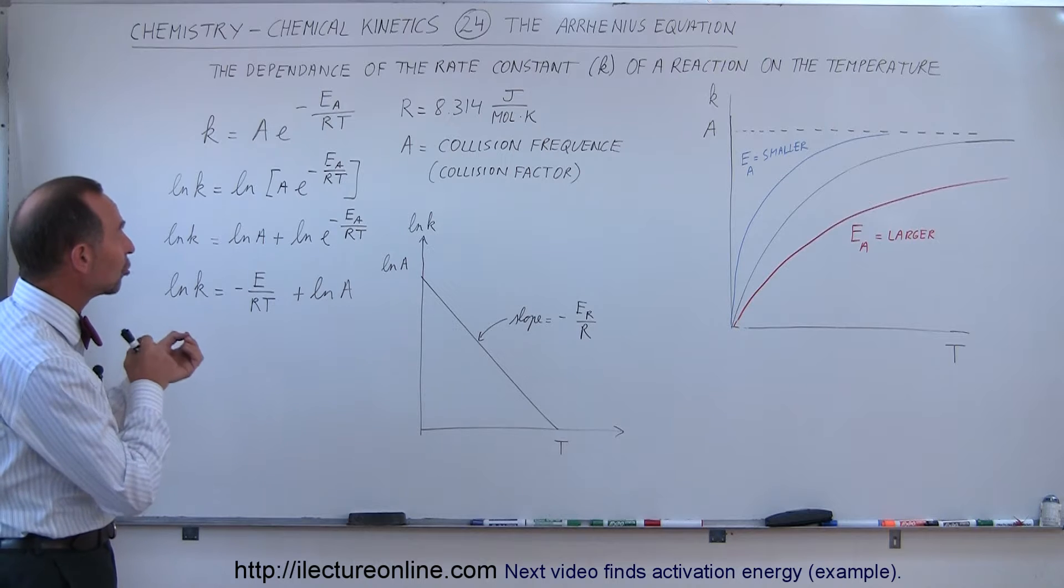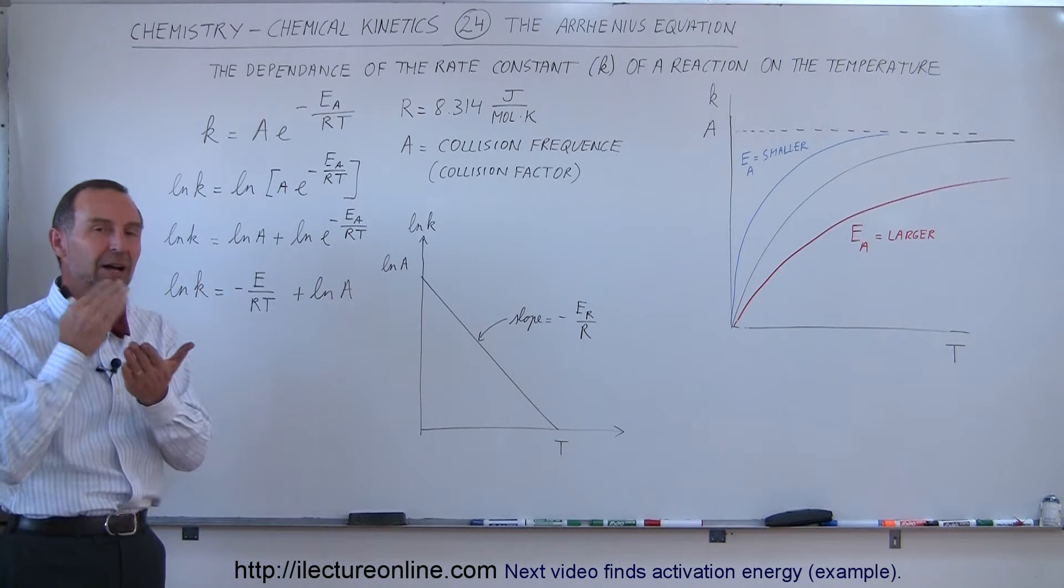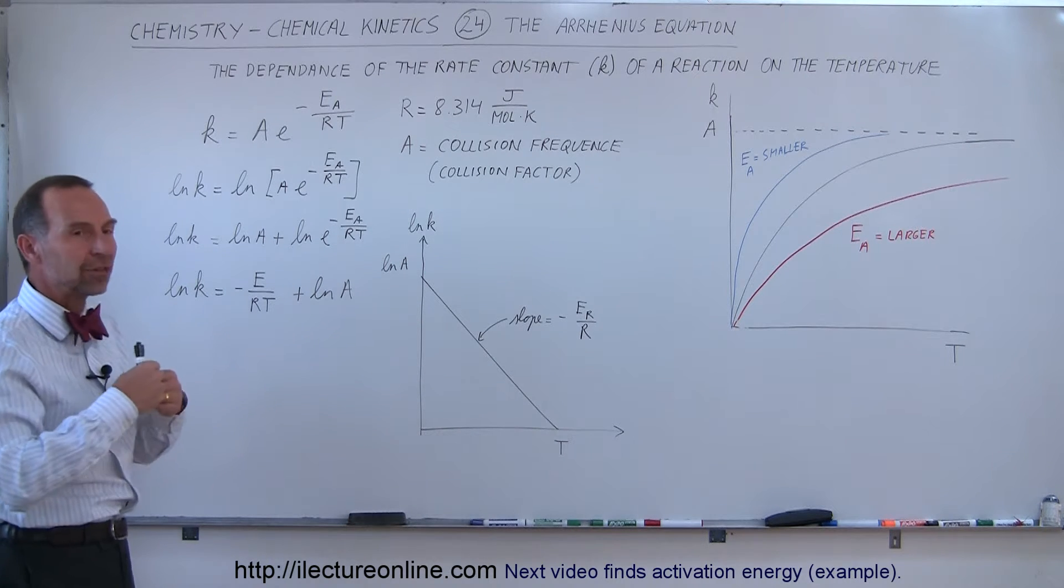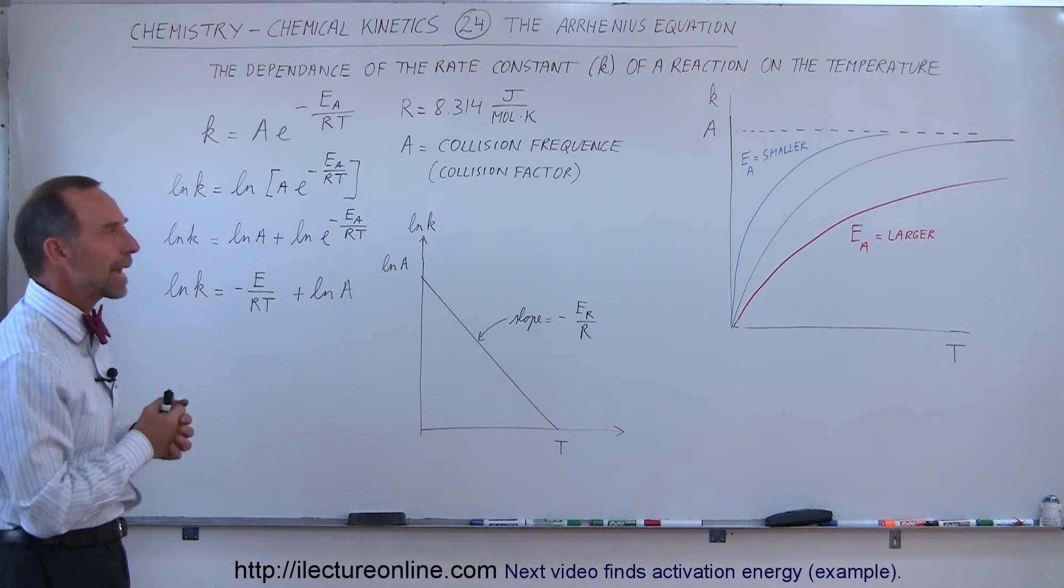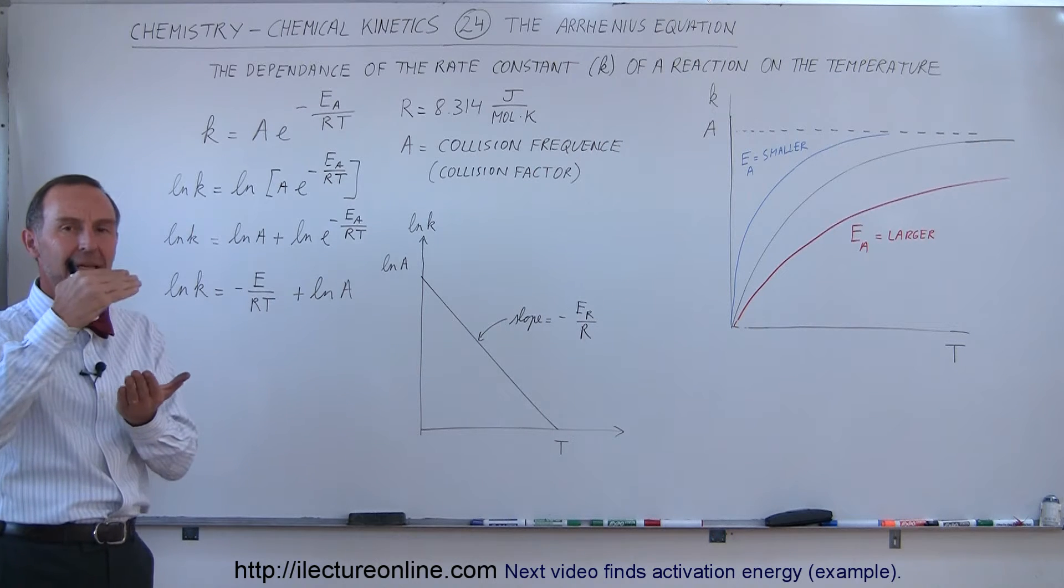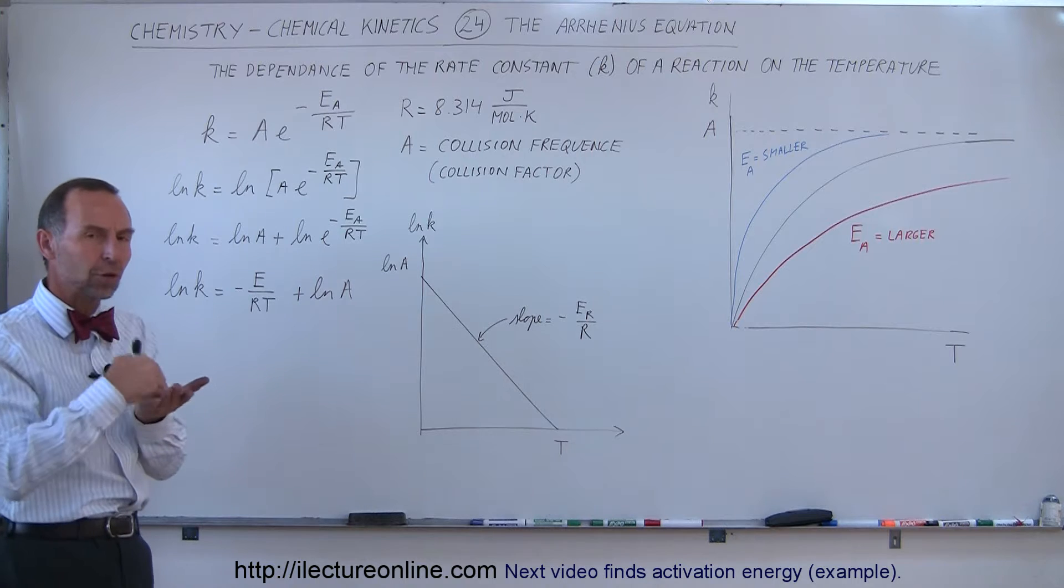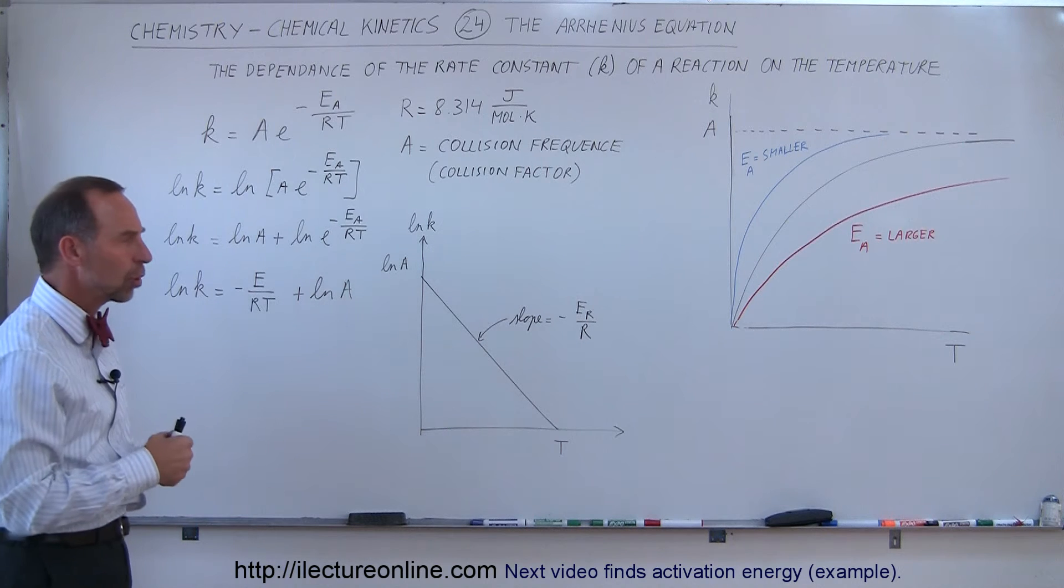Arrhenius figured out that there was a relationship, a dependency on the rate constant K and the reaction and the temperature of the reactants. If the temperature was high the reaction took place faster. If the temperature was low the reaction took place more slowly.